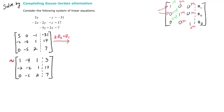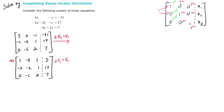Our goal is to get zeros below the leading 1. Notice we already have a 0 there, which is nice. Now we want to get this next 0. We're going to pivot from row 1 and do 2 times row 1 added to row 2, storing in row 2. We use the tilde symbol to represent row equivalent, and copy row 1 and row 3 since those don't change.